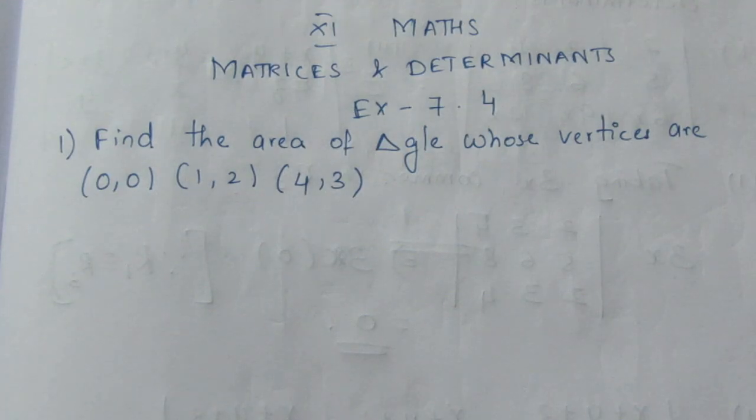We will see the first sum in this video. Find the area of a triangle whose vertices are (0,0), (1,2), (4,3).